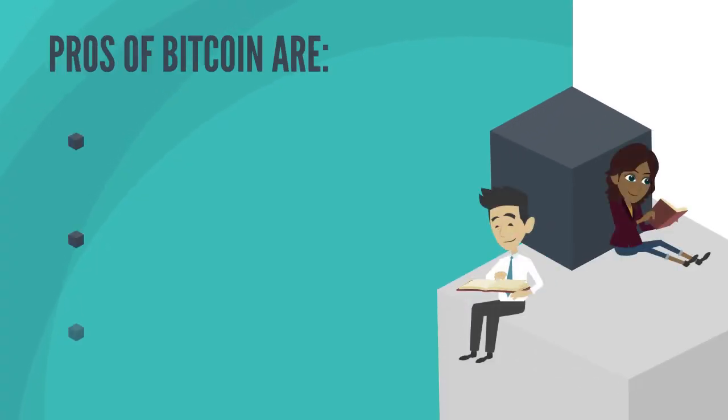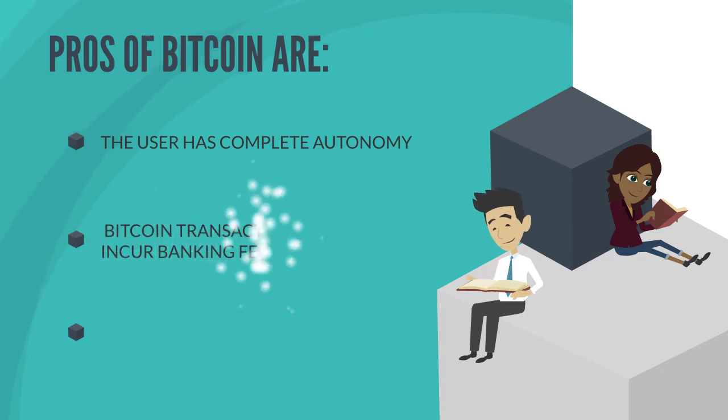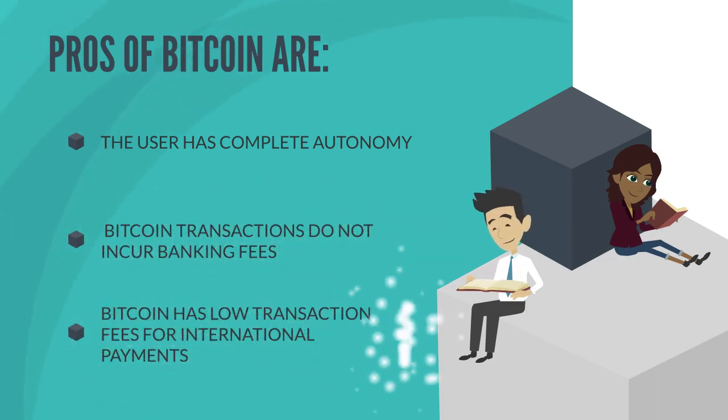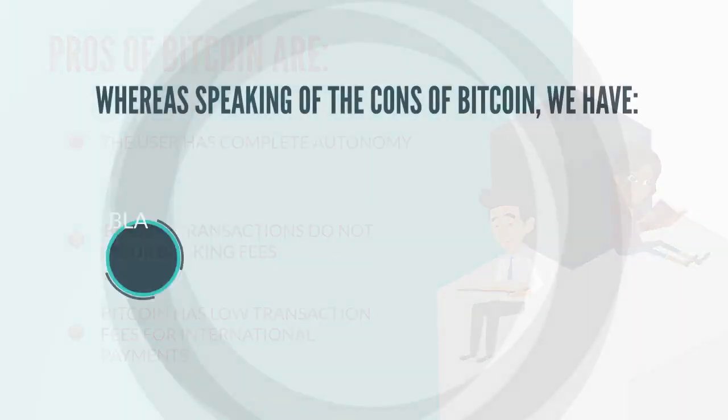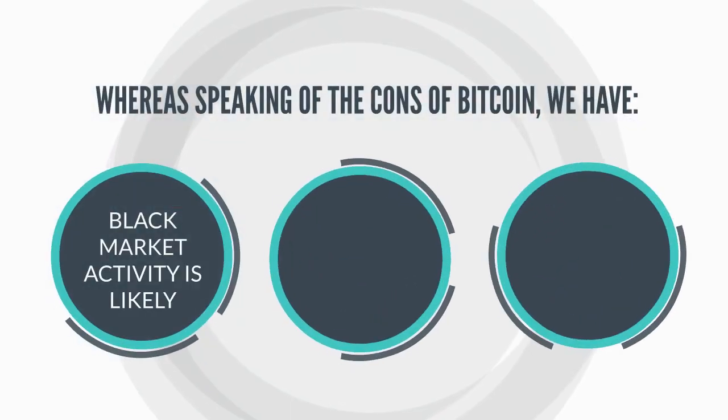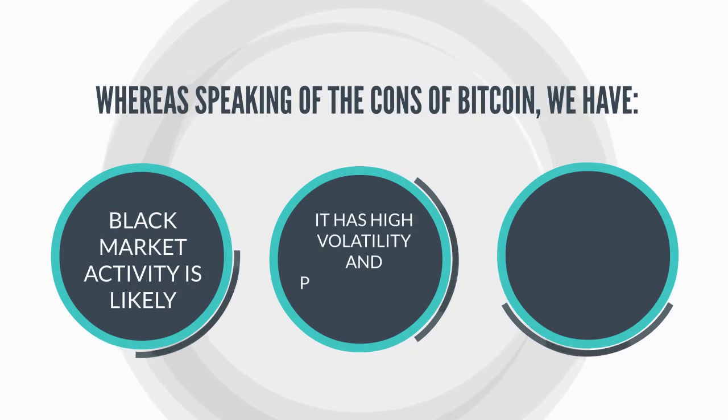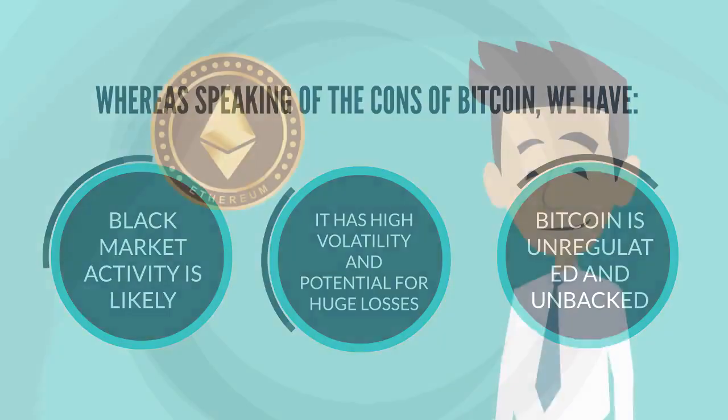To summarize, the pros of Bitcoins are: the user has complete autonomy, Bitcoin transactions do not incur banking fees, Bitcoin has low transaction fees for international payments. Whereas, speaking of the cons of Bitcoin, we have: black market activity is likely, it has high volatility and potential for huge losses, Bitcoin is unregulated and unbacked.